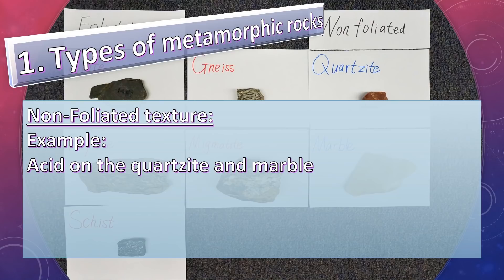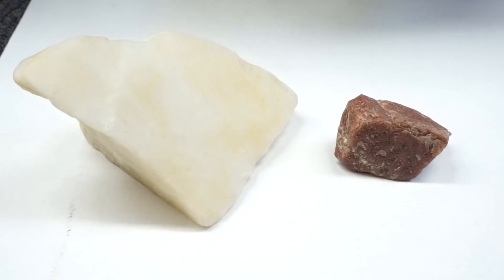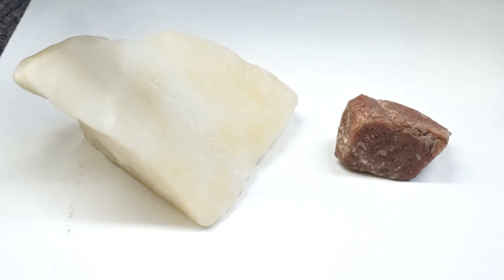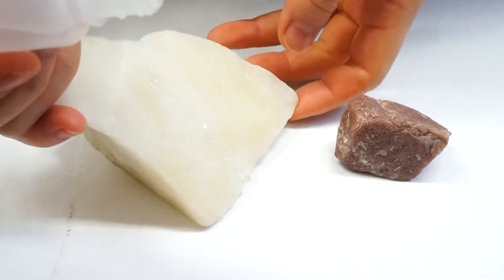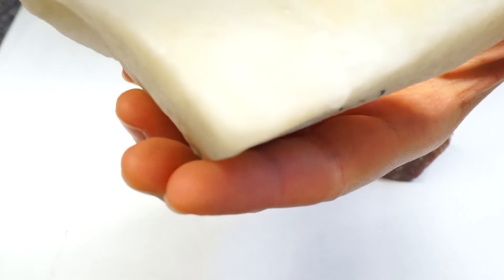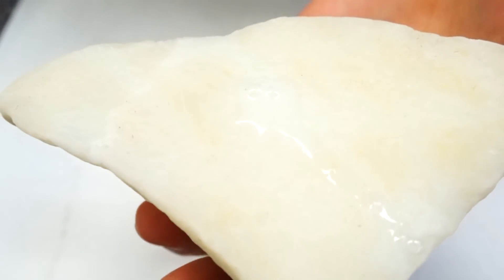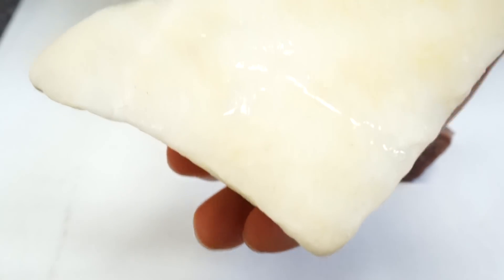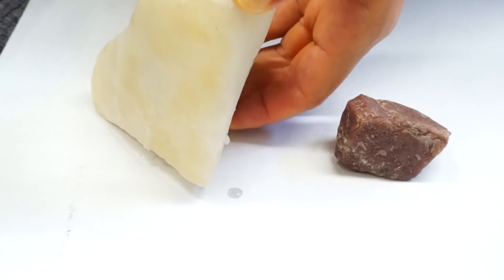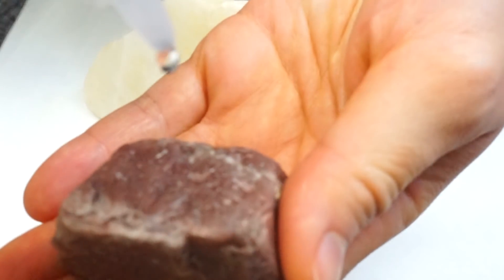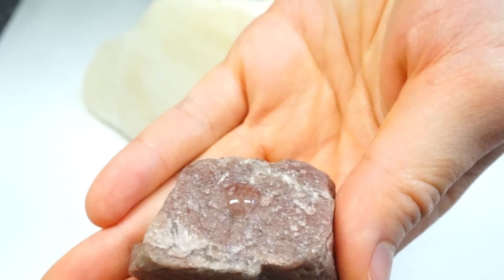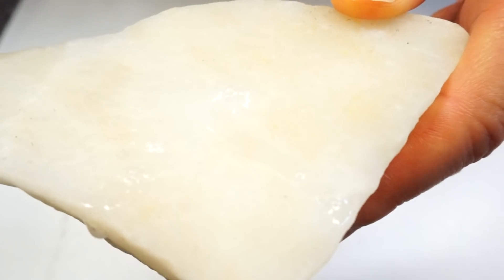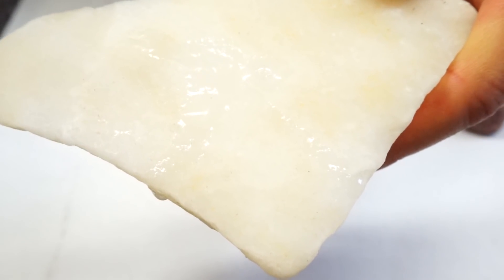For example, acid test on the quartzite and marble. Drop an acid on the sample. Notice the bubbles — no bubbles on quartzite, so this is quartzite. Bubbles appear on the other sample, so this is marble.